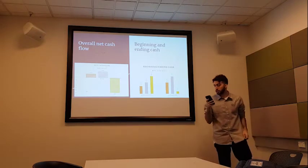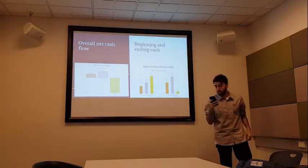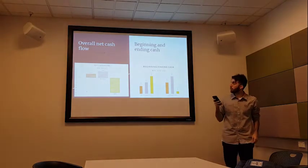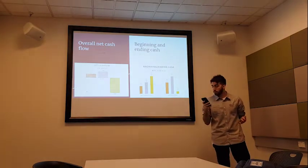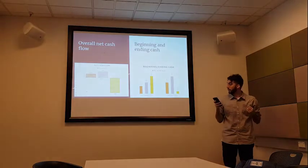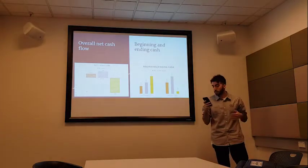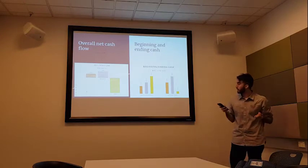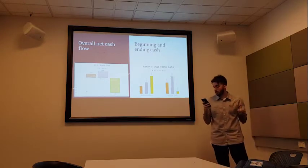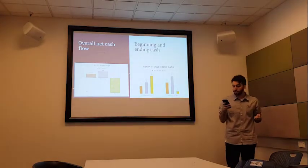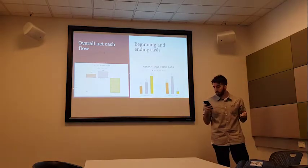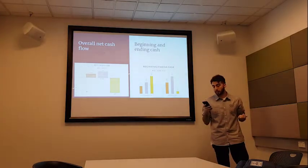Overall net cash flows and beginning cash amounts. Now I'm going to be looking at the overall net cash flow and the beginning and ending cash amounts. With regards to the overall net cash flow, consisting of all three net cash flows, we see an increase in overall net cash flow between the years 2015 and 2016, resulting in the beginning and ending cash values to also increase. Unfortunately, this trend changes in the year 2017, where we can see a value of negative 60 from the overall net cash flow, resulting in ending cash for the year being a value of 10.